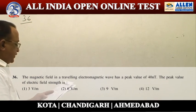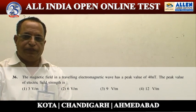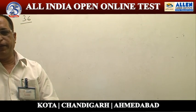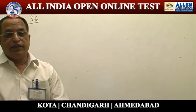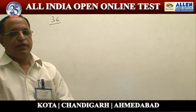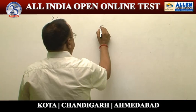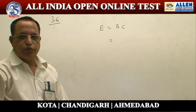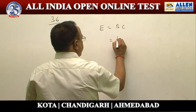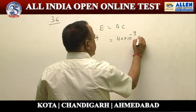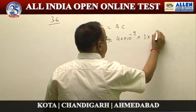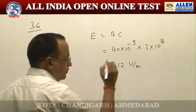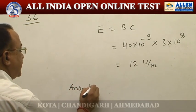Question number 36 is related to electromagnetic waves. In an electromagnetic wave, time-varying E produces B and time-varying B produces E; as they produce each other, E and B are related. The relation is E = BC. In the problem, B is given as 40 nano Tesla and the velocity of light is 3 × 10⁸ m/s. Hence, the answer is 12 volt per meter.